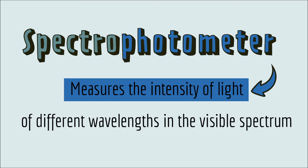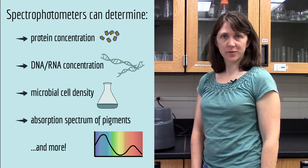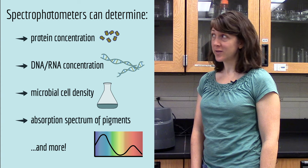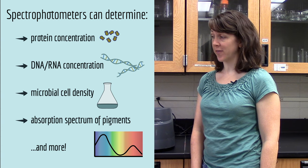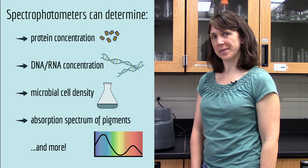It measures the intensity of light of different wavelengths in the visible spectrum. Spectrophotometers can be used to do lots of different things. Let me give you one example.